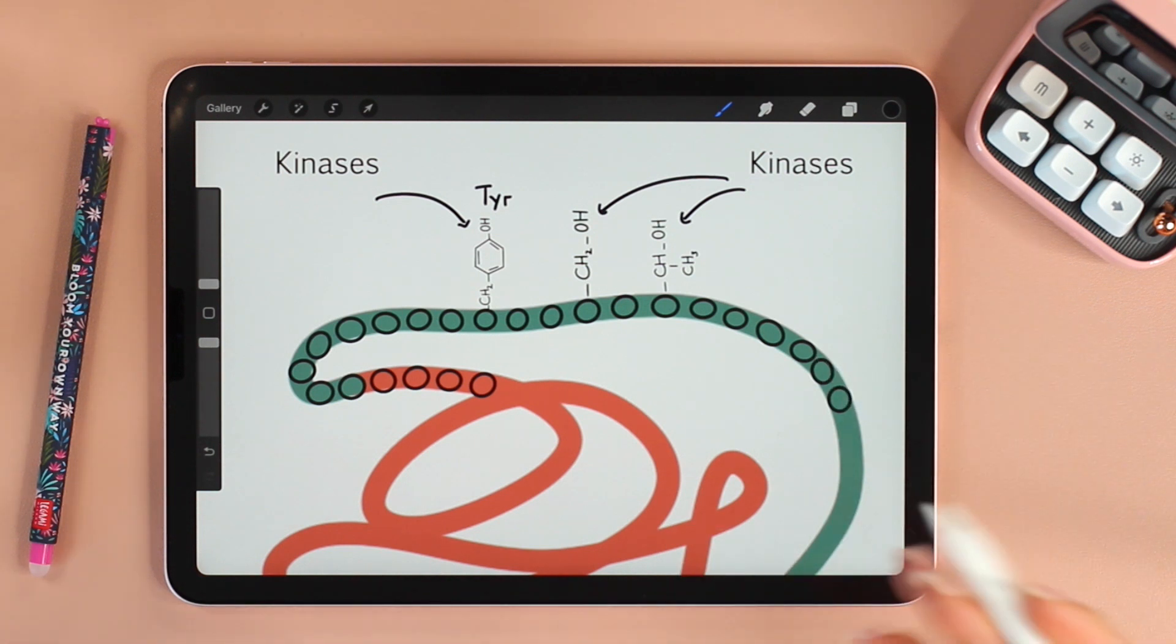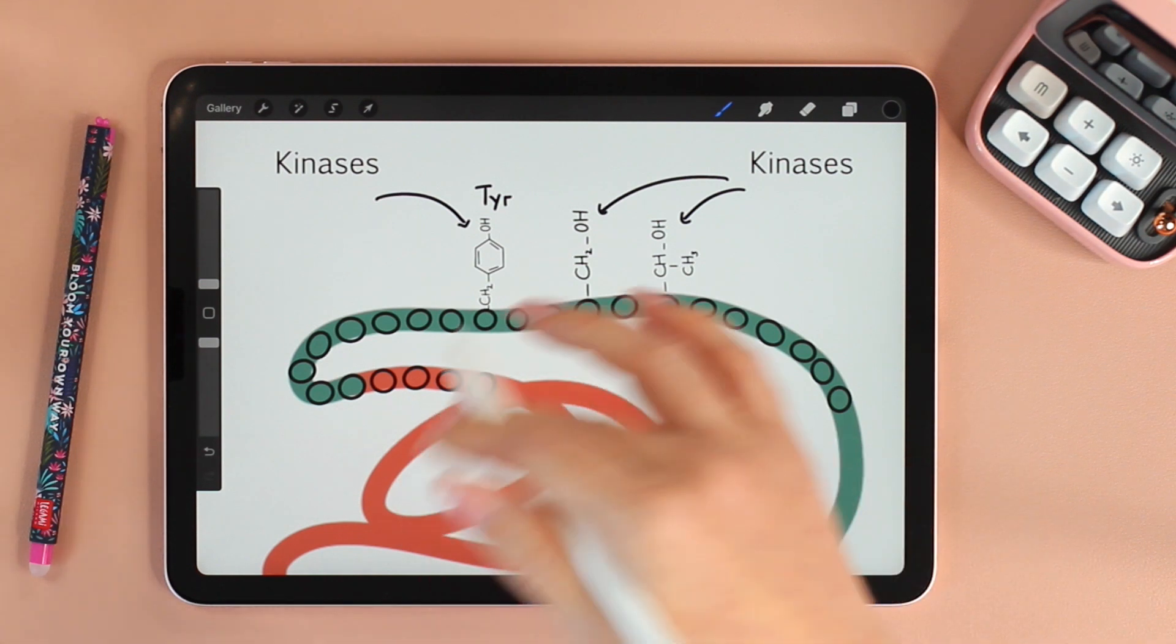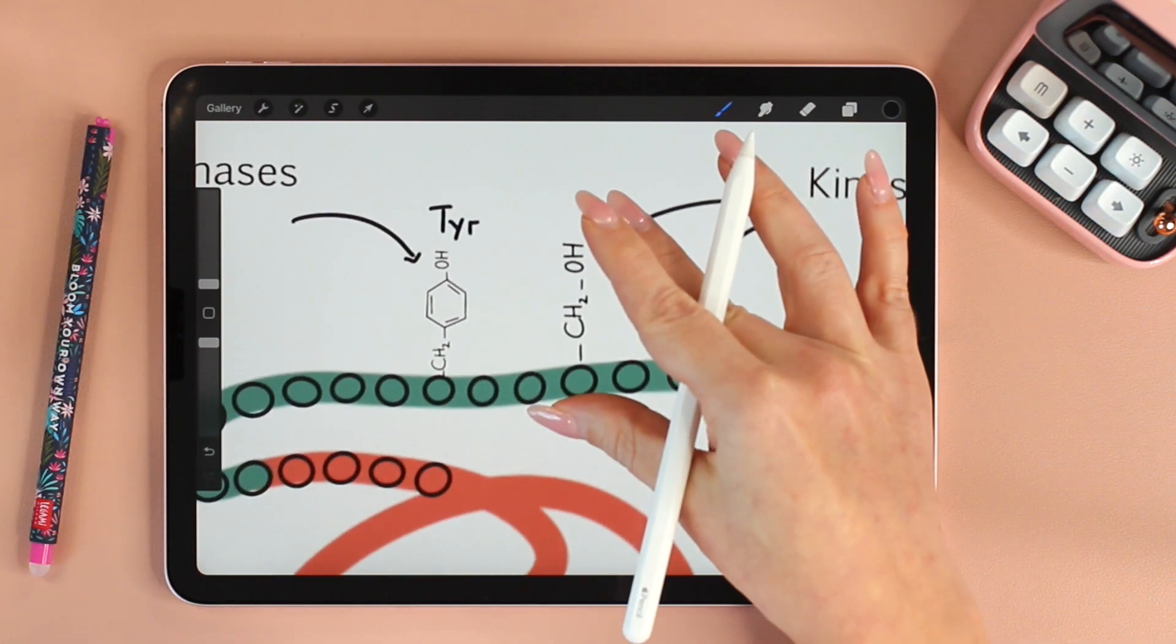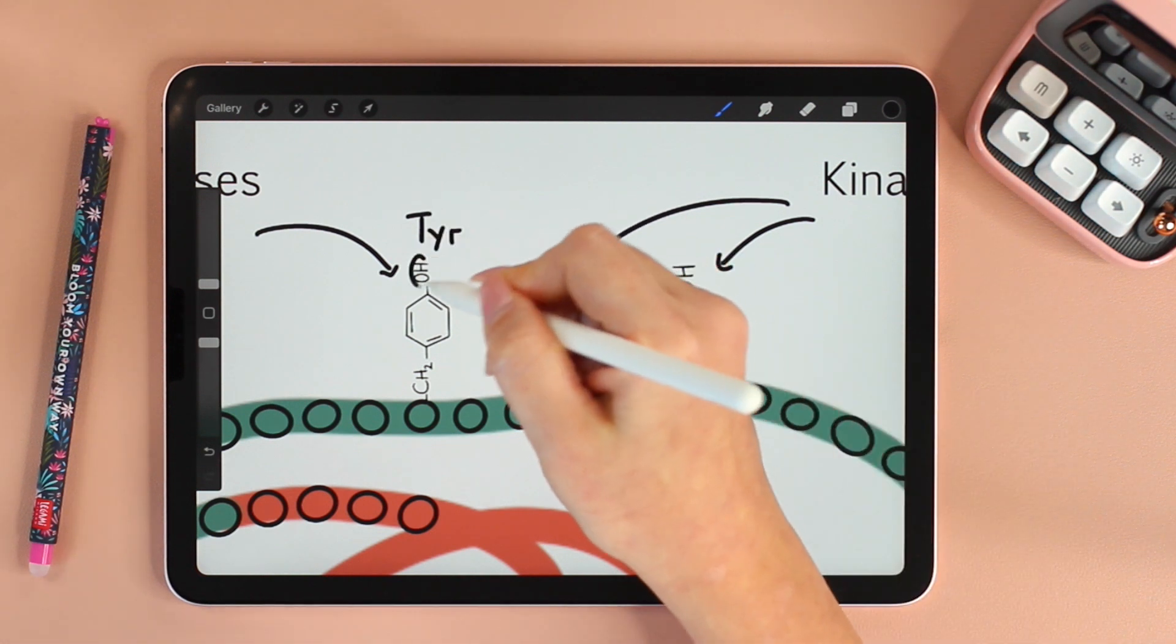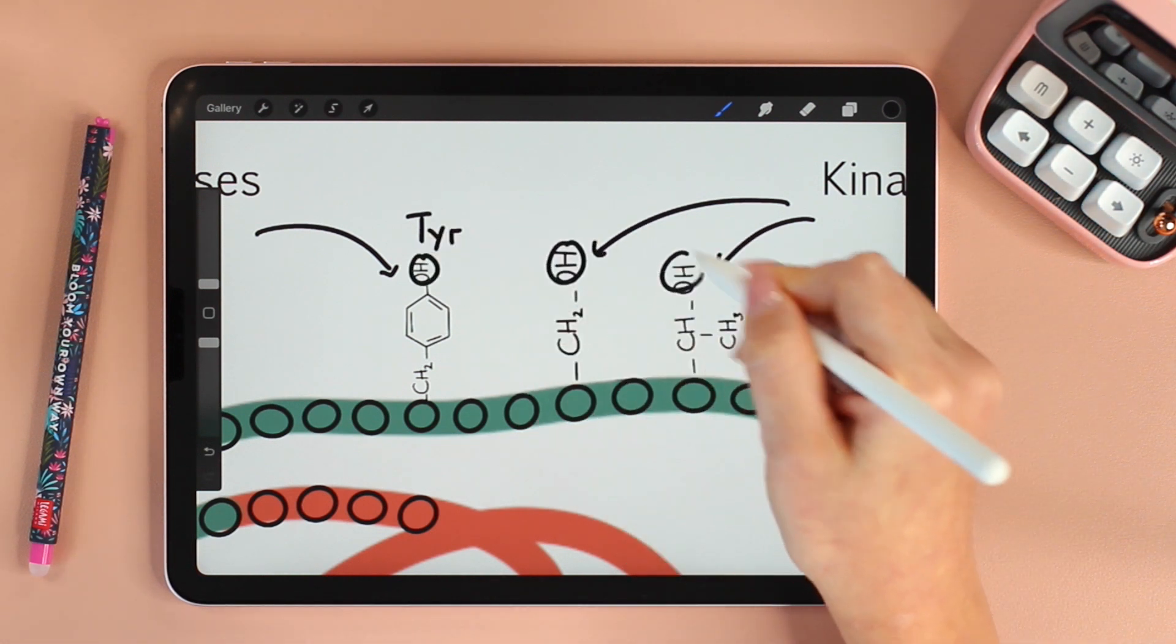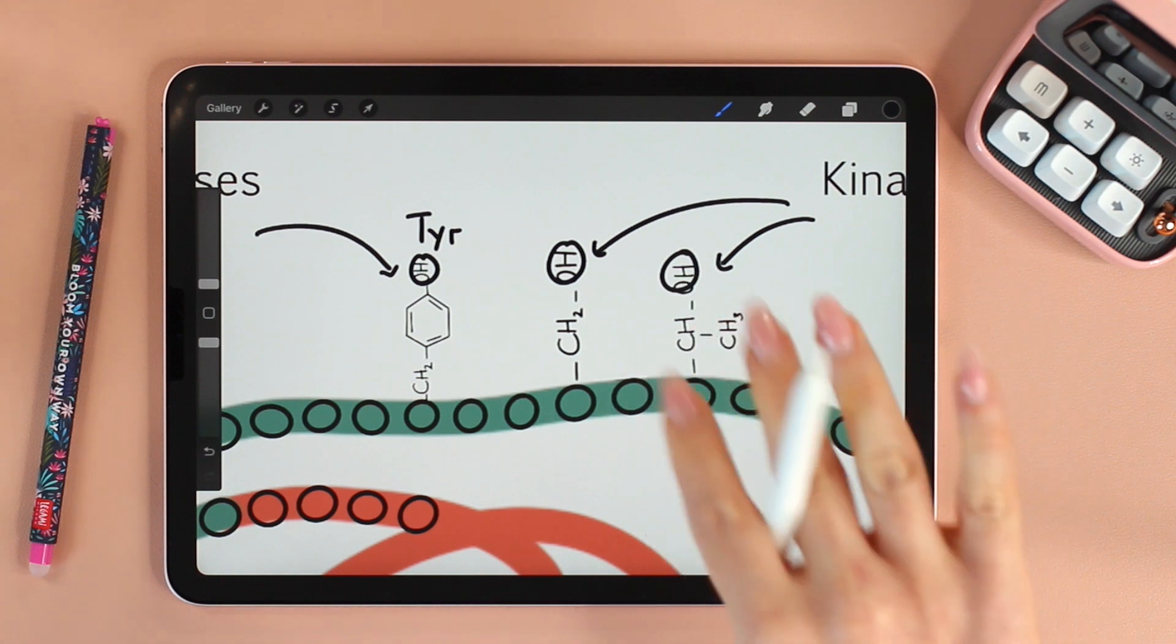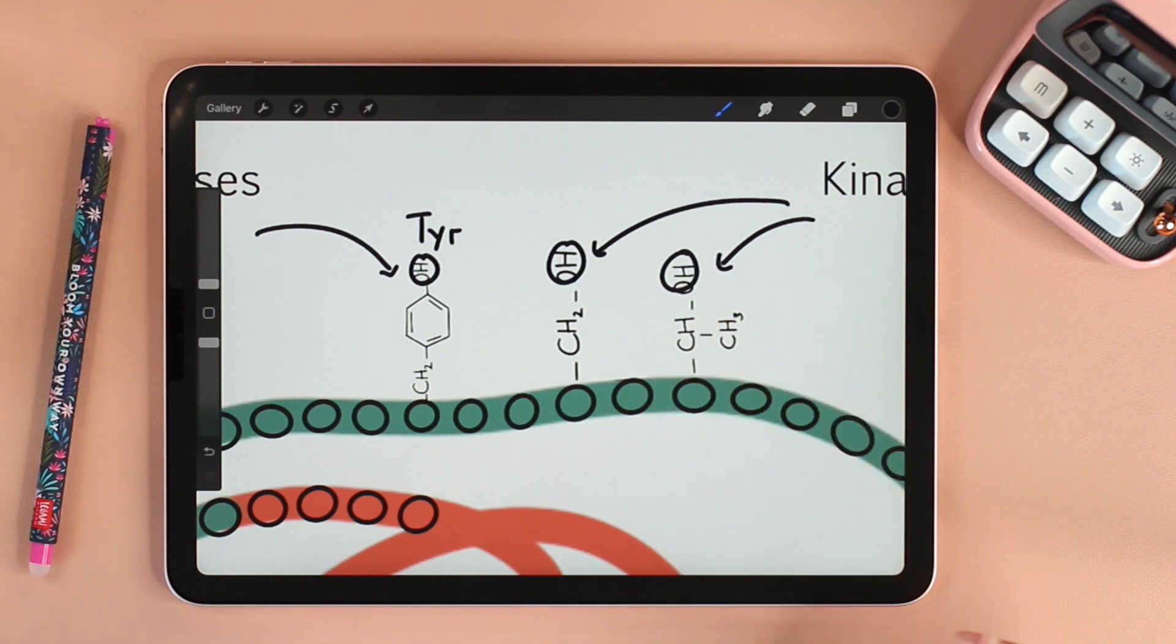You might ask why? Why serine, threonine, and tyrosine? It's because these amino acids—let's zoom in more, and you could all see that these three amino acids have the OH, the hydroxyl functional group. And you need the hydroxyl group in order to replace the hydrogen with the phosphate group.